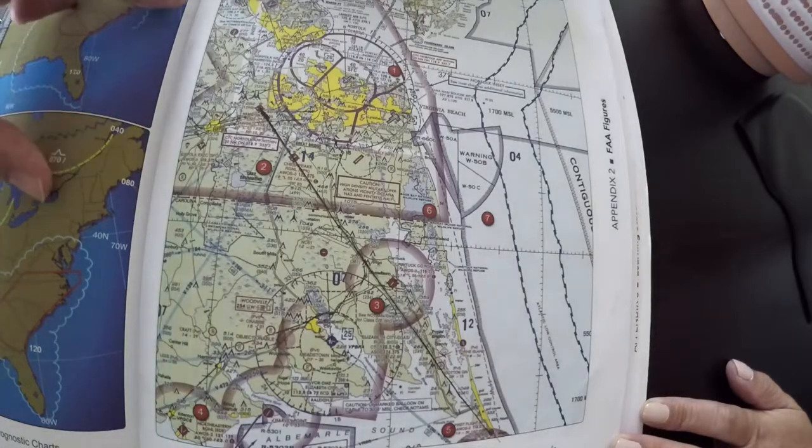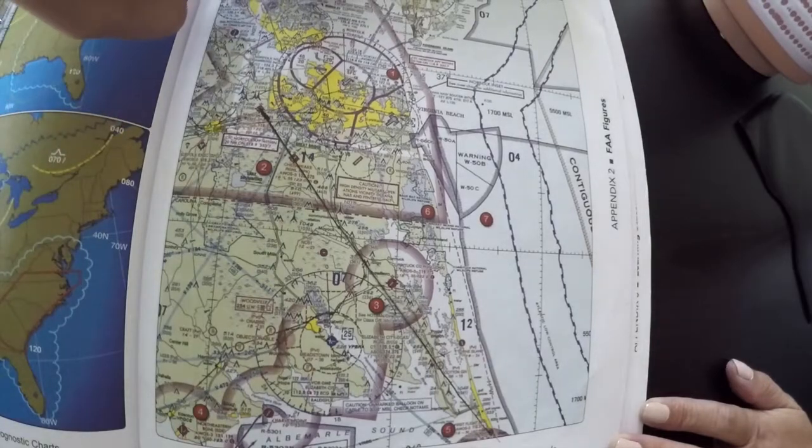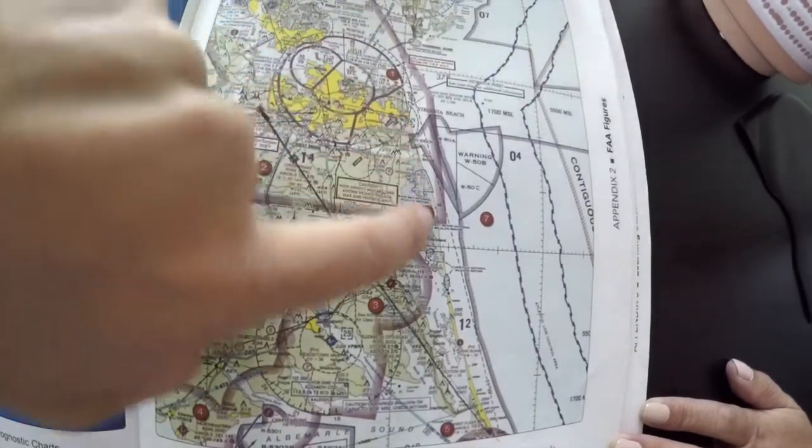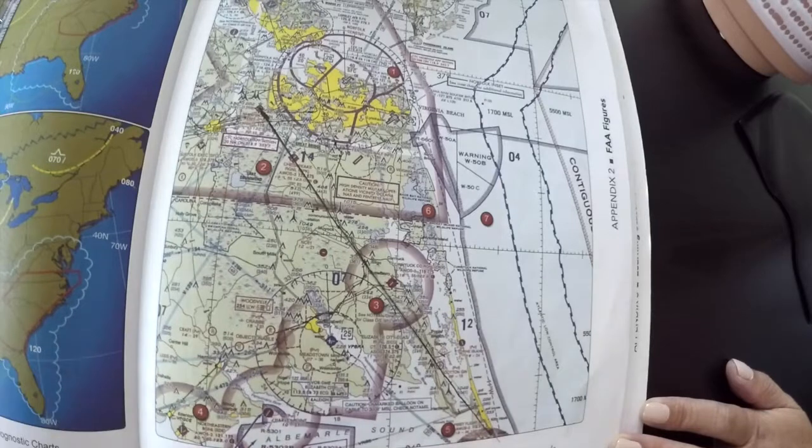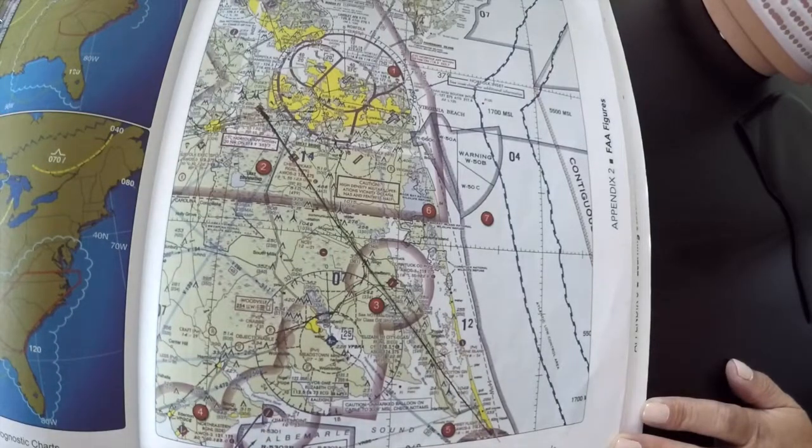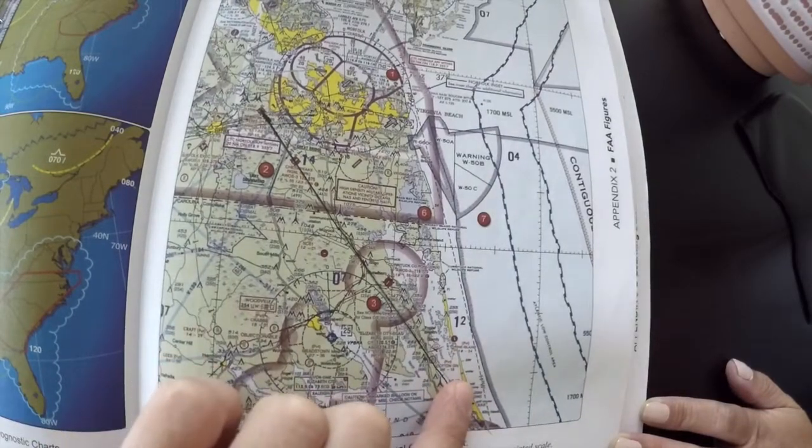In this case, we find our isogonic line, which is a dotted magenta line that's kind of running down along the chart. And it says at the bottom, 11 degrees west.